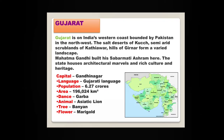Gujarat is on India's western coast, bounded by Pakistan in the northwest. The salt deserts of Kutch, semi-arid scrublands of Kathiawar, and hills of Girnar form a varied landscape. Mahatma Gandhi built his Sabarmati Ashram here. The state houses architectural marvels and a rich culture and heritage. The capital of Gujarat is Gandhinagar and the animal mostly found here is the Asiatic lion, found in the Gir forest.